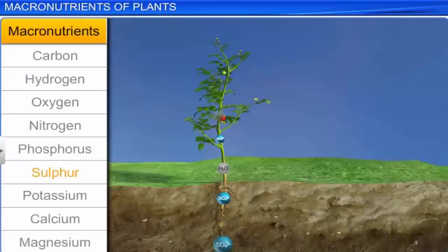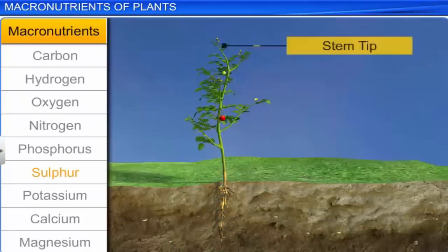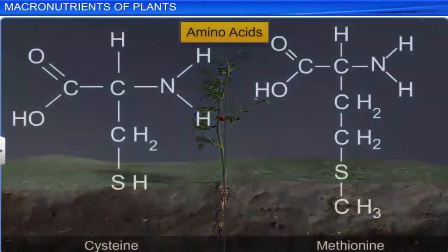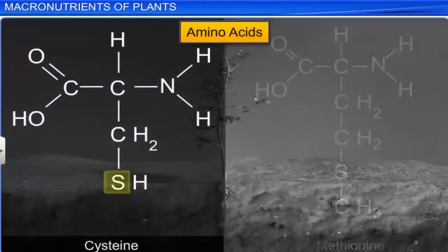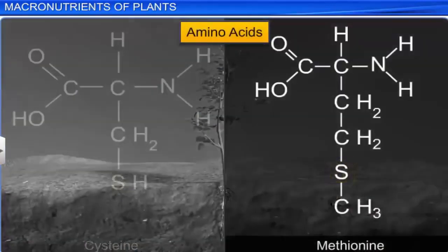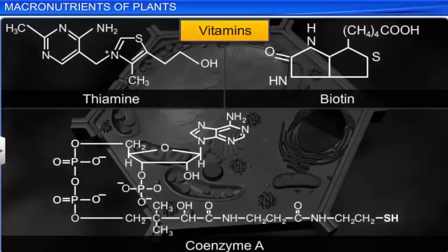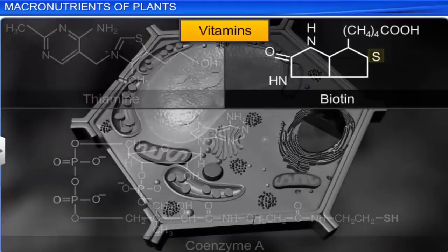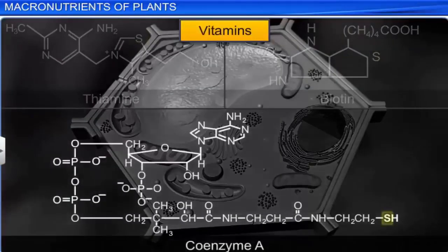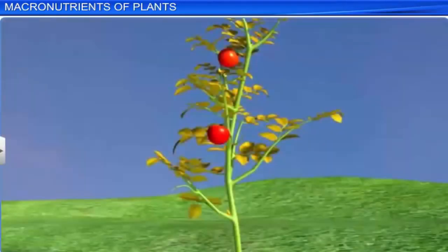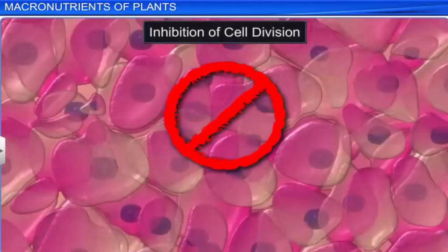Plants obtain sulfur from the soil. Growing parts like stem tips, root tips, and young leaves require sulfur. It is a constituent of amino acids like cysteine and methionine, making it an important part of proteins. Vitamins like thiamine, biotin, and coenzyme A also have sulfur. Sulfur deficiency leads to symptoms like chlorosis and inhibition of cell division.